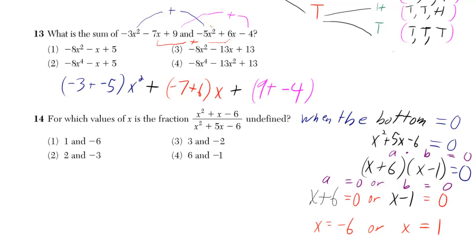We need to find our like terms and add them. In blue we have negative 3x squared and negative 5x squared. You just add up the two numbers in front, negative 3 and negative 5, and then you still put x squared.